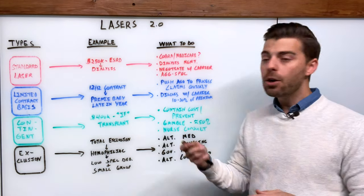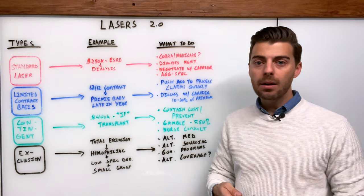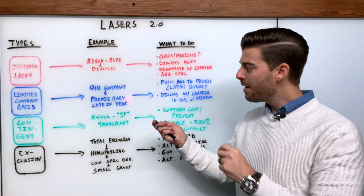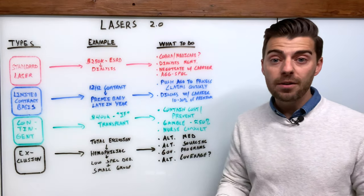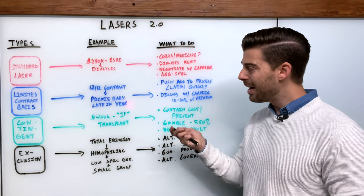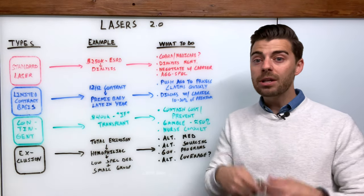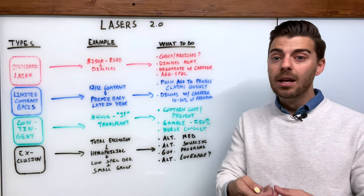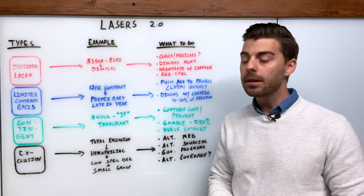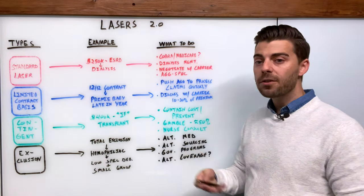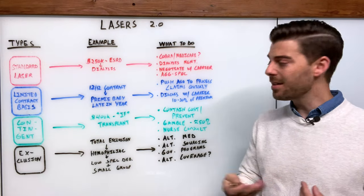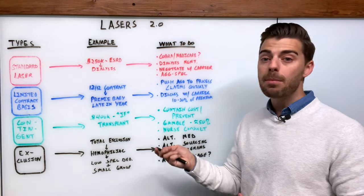What is an example of this? Again going back to the preemie baby example that I referenced earlier. Maybe you have a preemie baby that was born on November 15th. Well depending on how quickly that ASO is going to adjudicate and process those claims, you might have some claims that are running into the next policy period.